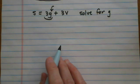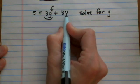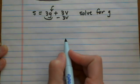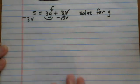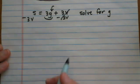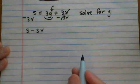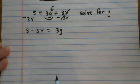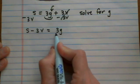The first thing I want to do is isolate the entire term that contains g. That means I want to get rid of this plus 3v term. If it's being added, I subtract it off to get it to combine to zero. I subtract 3v on both sides. With s minus 3v, there's nothing I can do, so I write s minus 3v equals 3g.